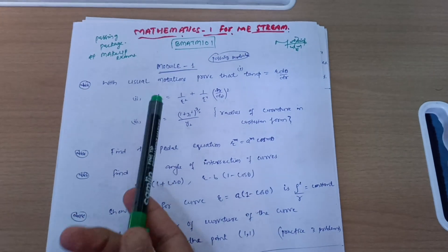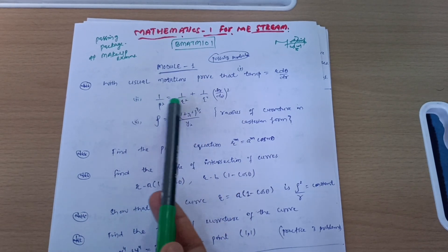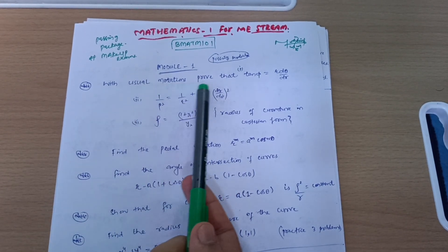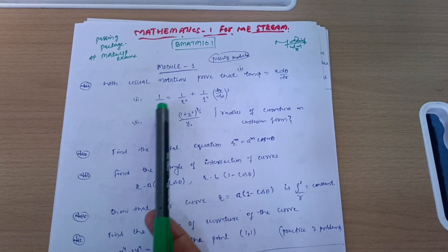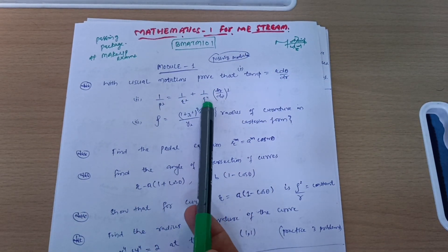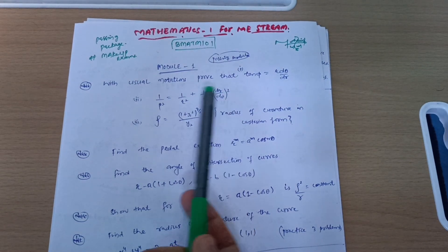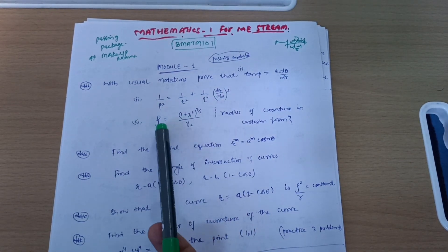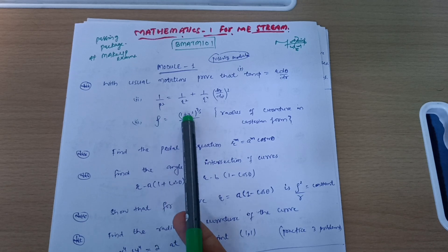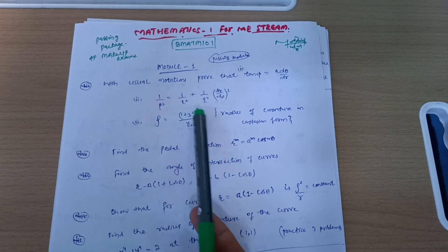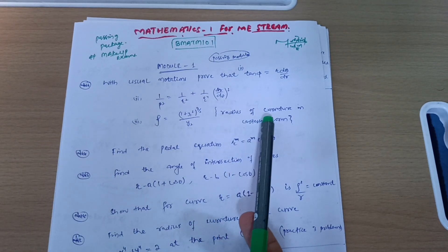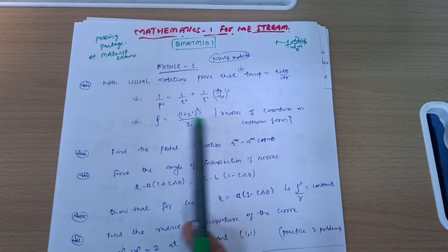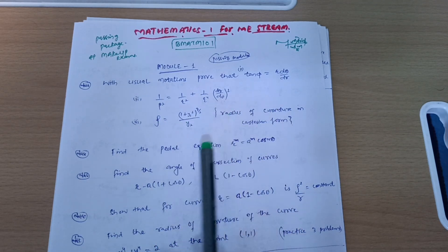The first module is the passing module. You have to cover questions like: with usual notations, prove that tan φ equals r·dθ/dr; 1/p² equals 1/r² plus (1/r⁴)·(dr/dθ)²; and with usual notations, prove that ρ equals (1 + y₁²)^(3/2) divided by y₂. Sometimes they will indirectly ask you to find the radius of curvature in Cartesian form — both are the same equation.